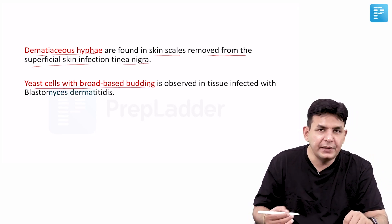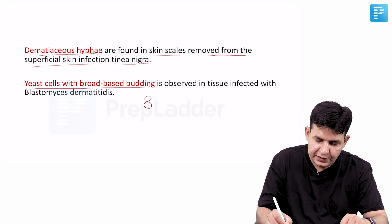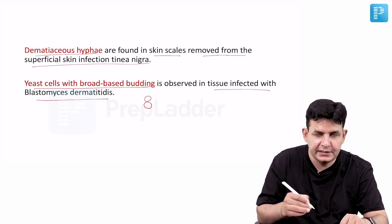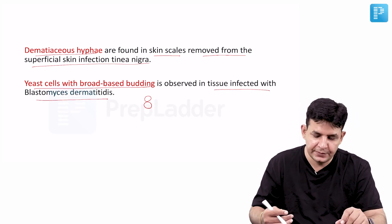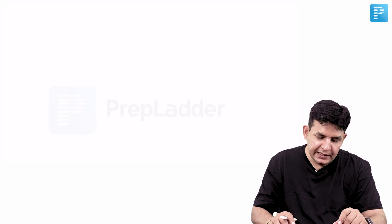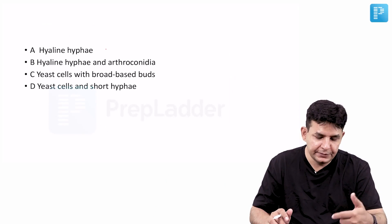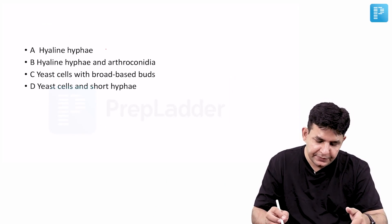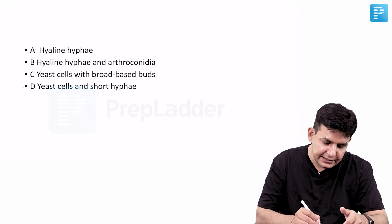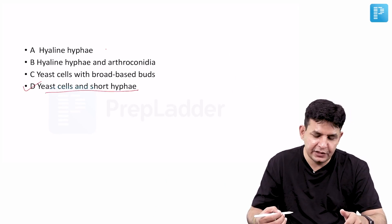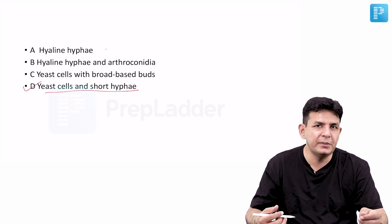Yeast cells with broad-based budding — you must know the figure-of-eight appearance from lectures. This is observed in tissue infected with Blastomyces dermatitidis, which causes blastomycosis. So, coming back to the question: the answer is yeast cells and short hyphae — option D — and that is what is termed the spaghetti and meatball appearance.